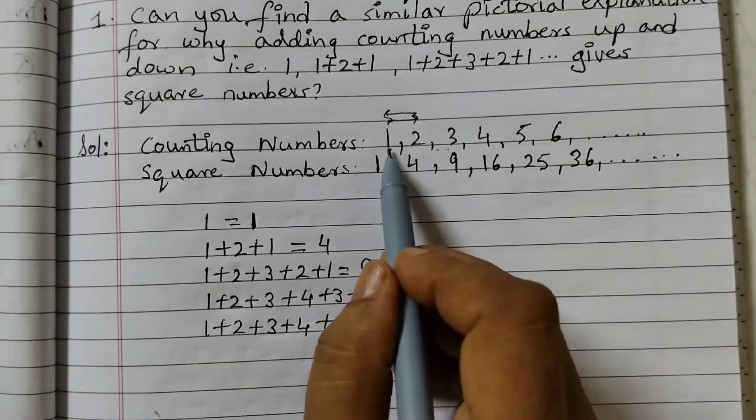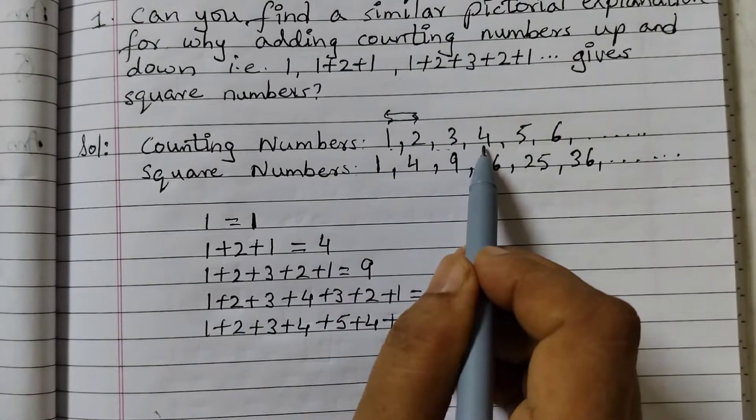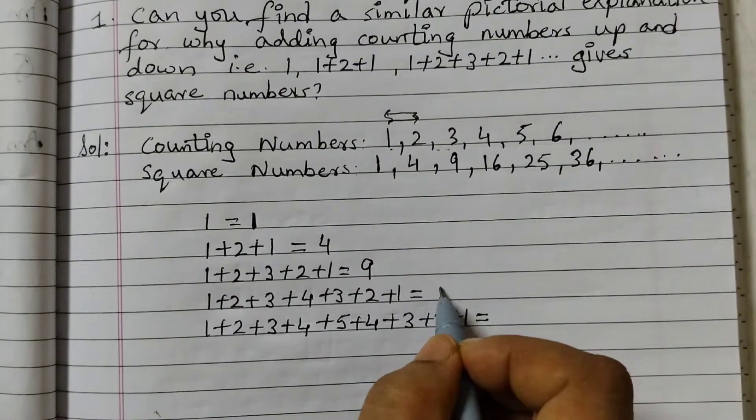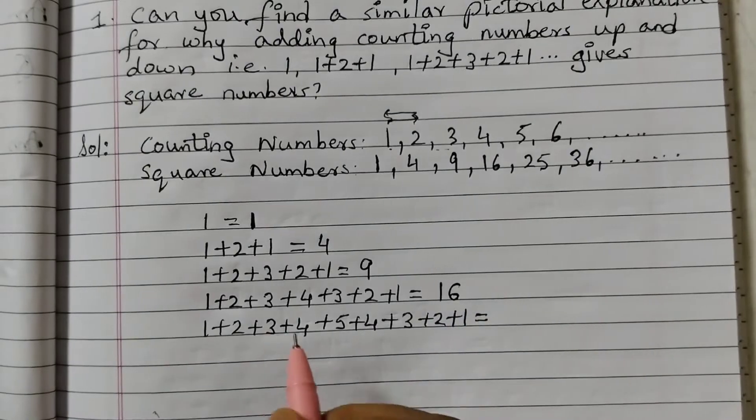Same way, start from 1, go till 4 and come back to 1. When you add these numbers, you will get 16.